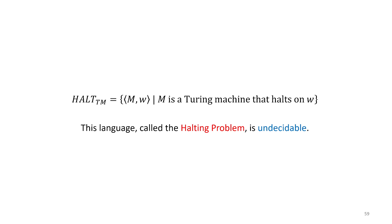We showed a different one, ATM. We're now going to show that halt TM, or the halting problem, is undecidable. It's very closely related to the language ATM. In this case we get an encoding of a machine and a string, but now all we care about is that the machine halts on the string, not whether it accepts or rejects. So it's a very similar language — we can probably see why if ATM is undecidable, halt TM is also going to be undecidable.